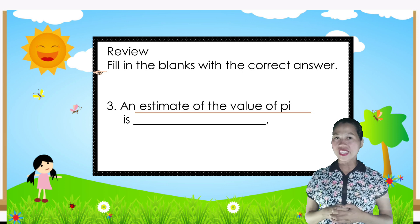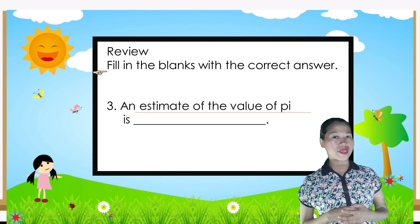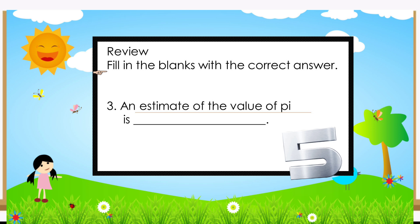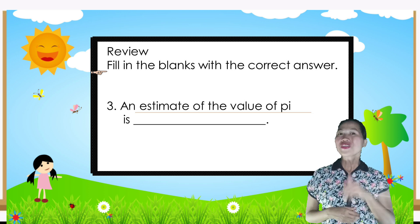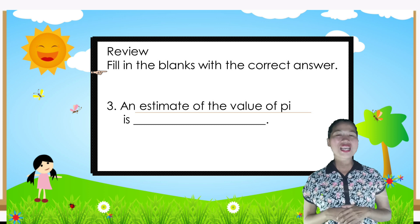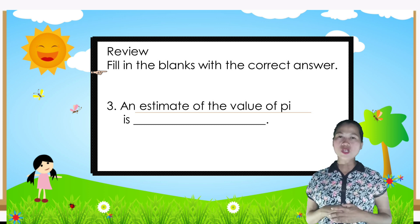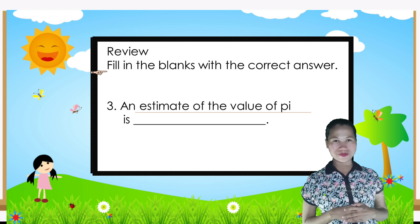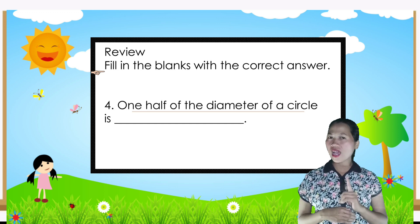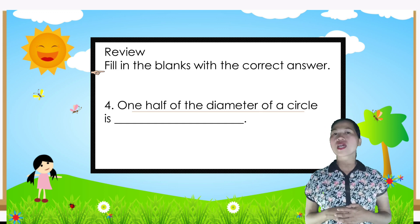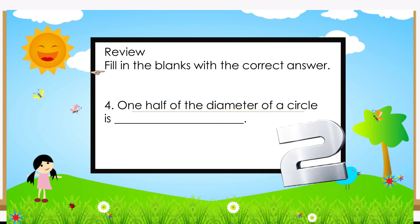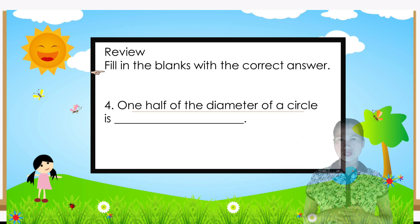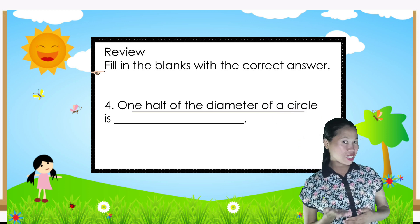An estimate of the value of pi is — you're right, the answer is 3.14 or three and fourteen hundredths. One half of the diameter of a circle is — the answer is radius.